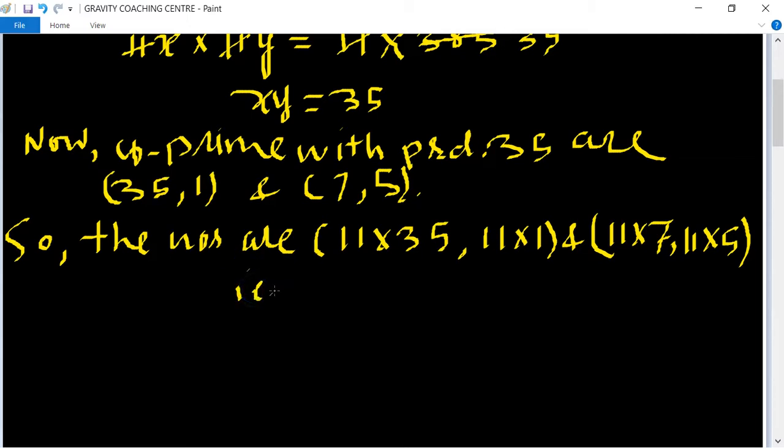That is 11 into 35 equals 385, 11 into 1 equals 11, and 11 into 7 equals 77, 11 into 5 equals 55. So we have 485 comma 11, and 77 comma 55.